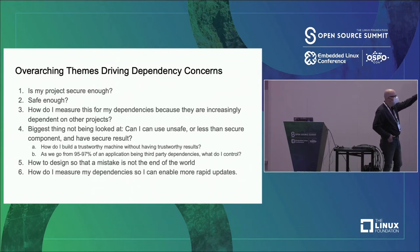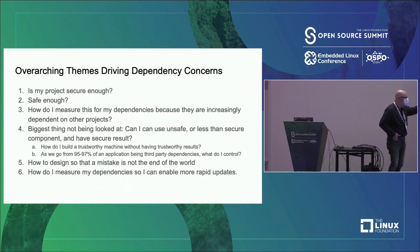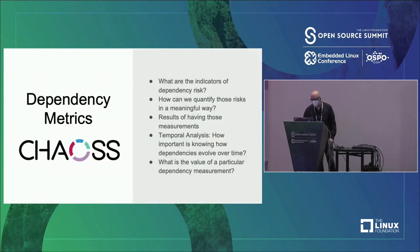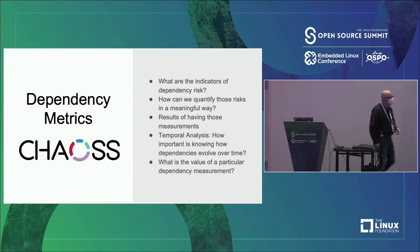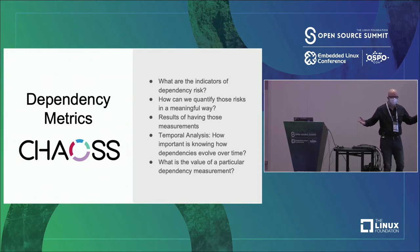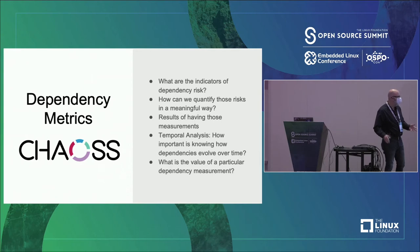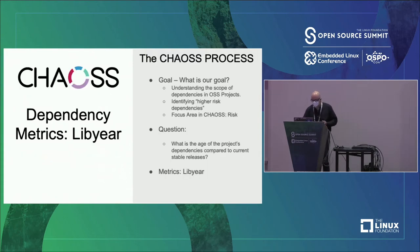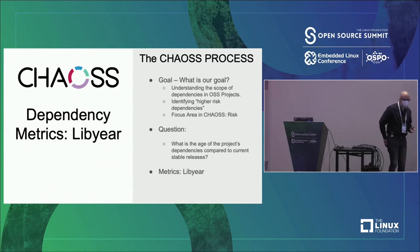What I want to talk about today is how we're going about within the CHAOSS project figuring out the measurement of dependency risks with open-source software — how it's systematic, answering these questions: Is my project secure and safe? Can I measure the dependencies at all? Can I use unsafe parts and still have a safe project? How do I design so a mistake isn't the end of the world? How do I measure dependencies to enable more rapid updates?